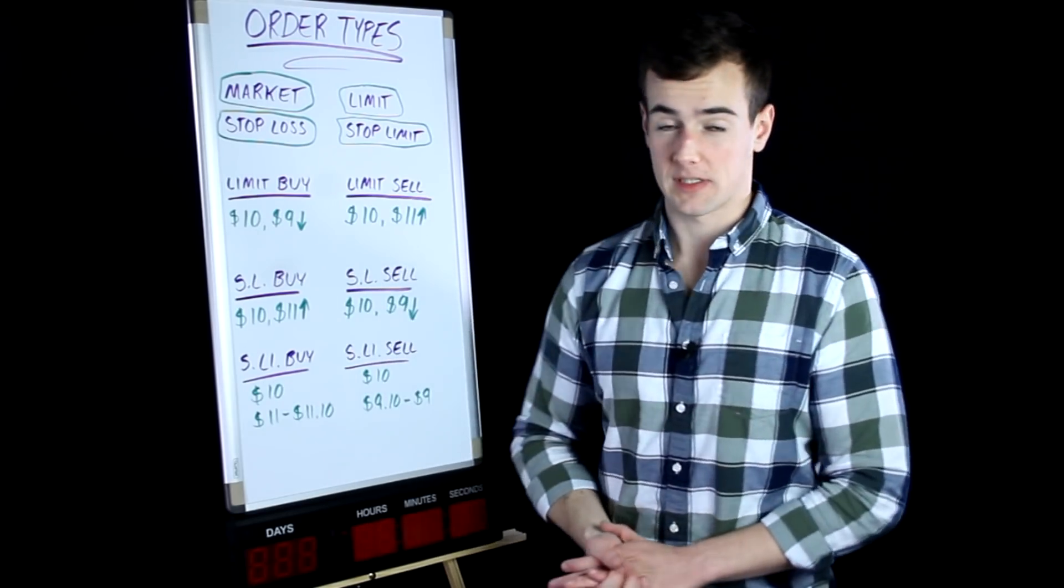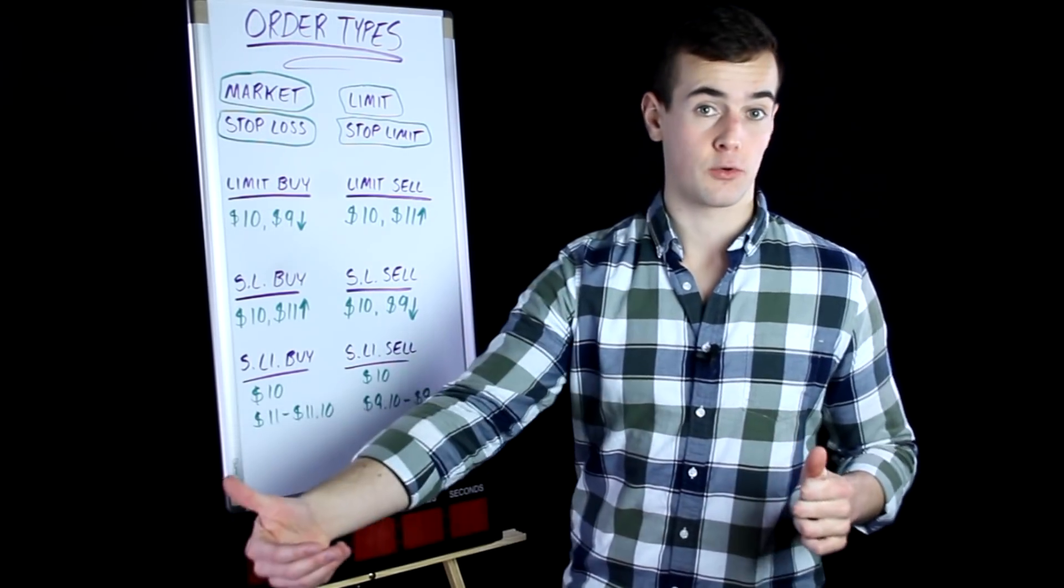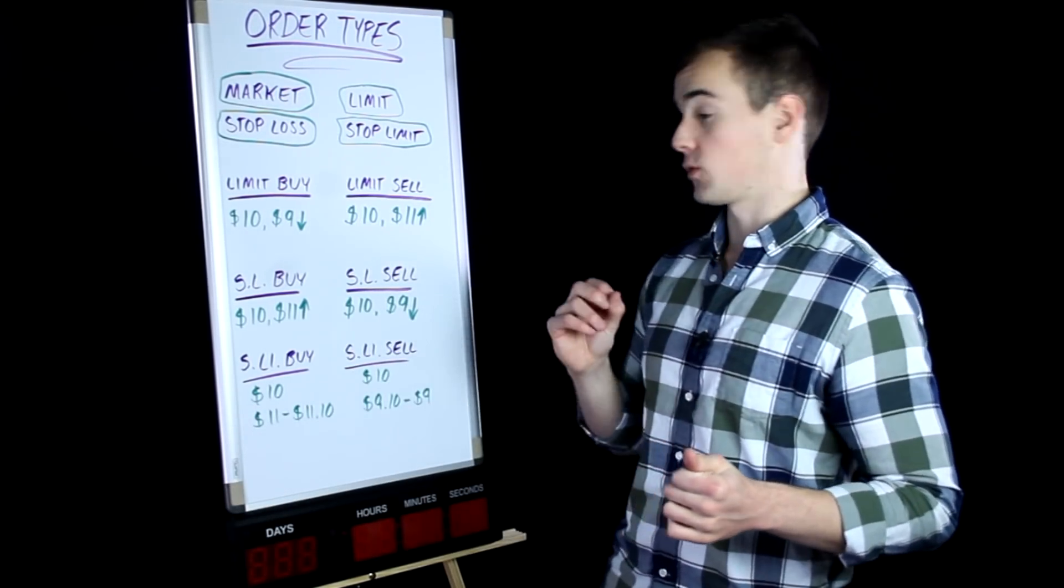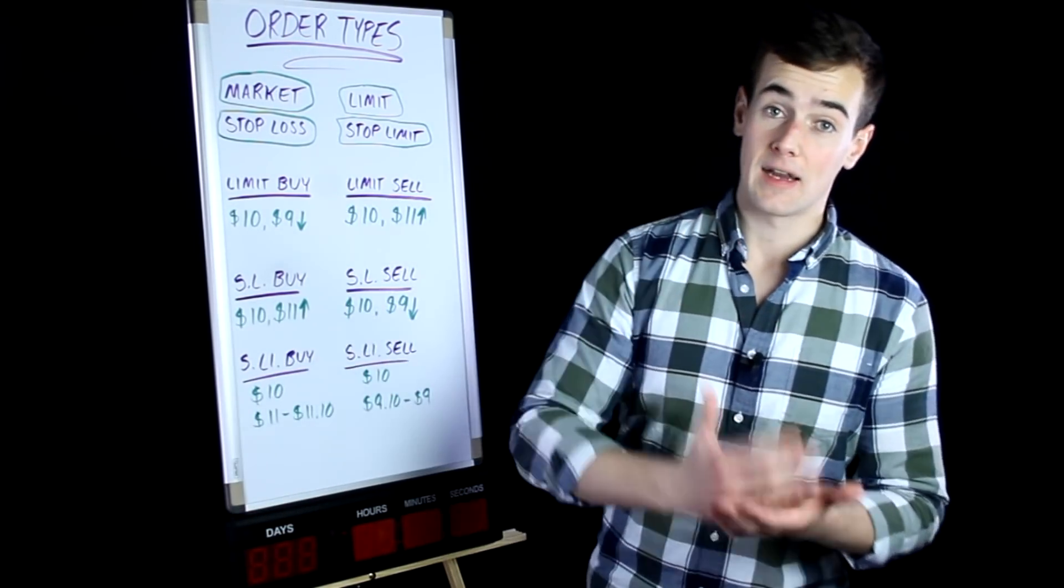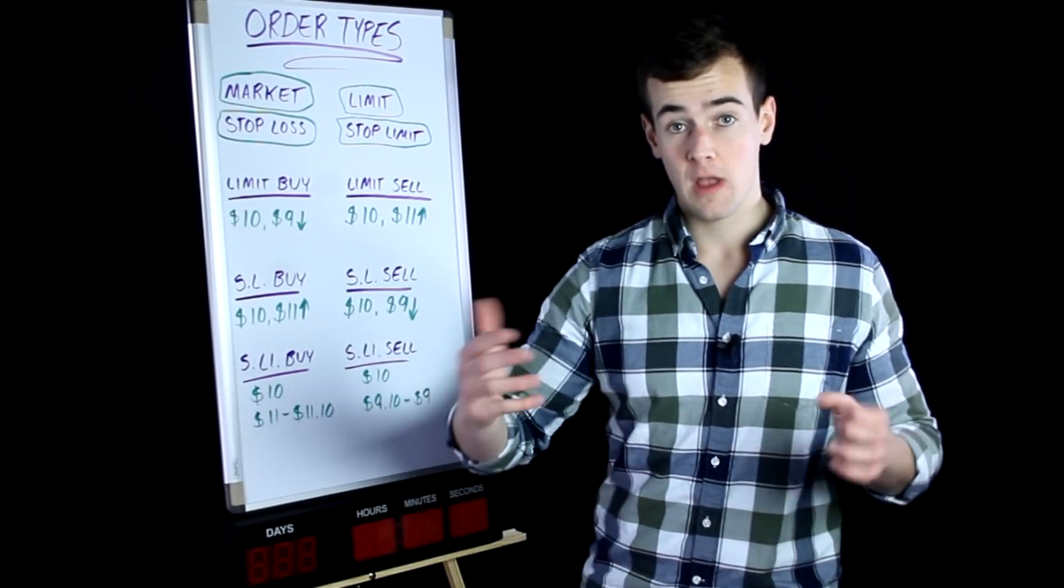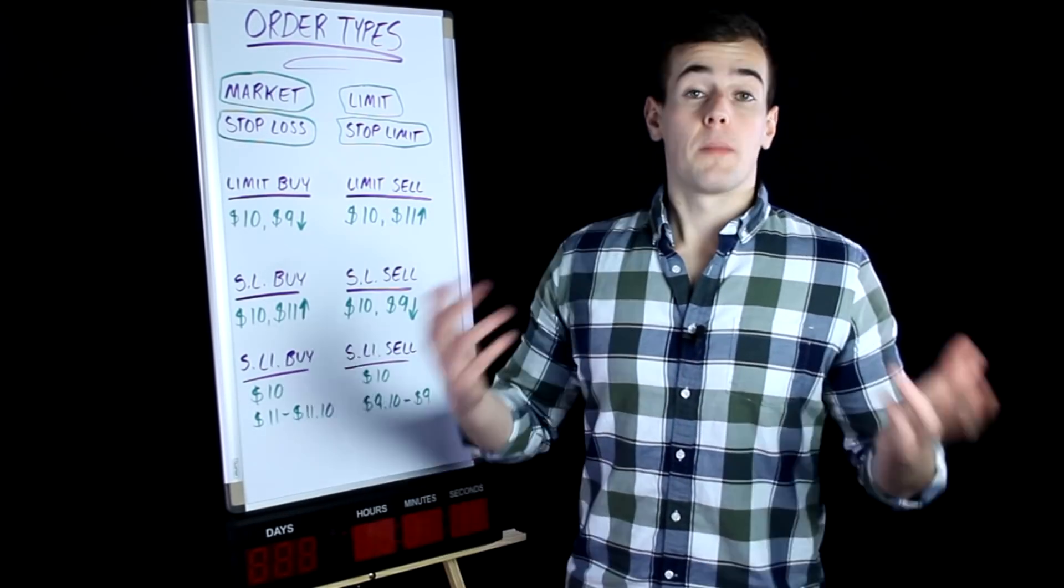And the same thing with the stop limit sell order. Let's say the stock was $10 a share and you were willing to sell it between $9.10 and $9.00. If that stock overnight went from $9.50 a share to $2 a share, the order would not be executed. But anyways guys, those are the four basic order types in a nutshell.